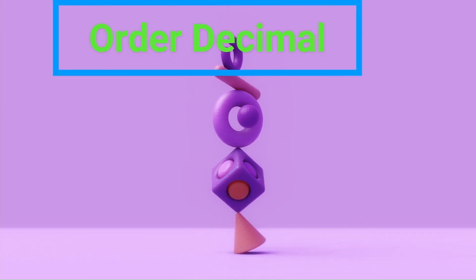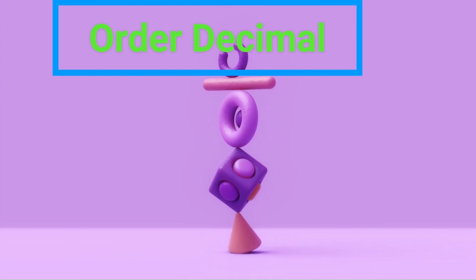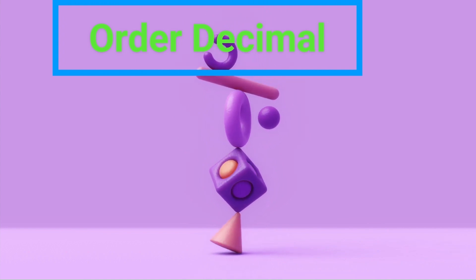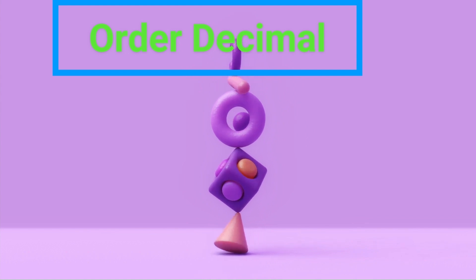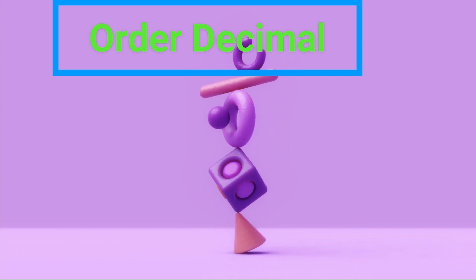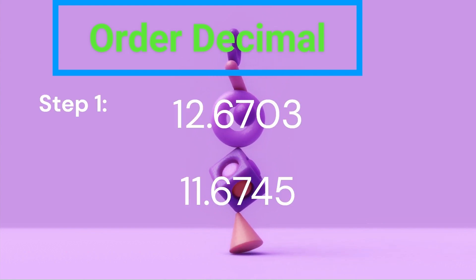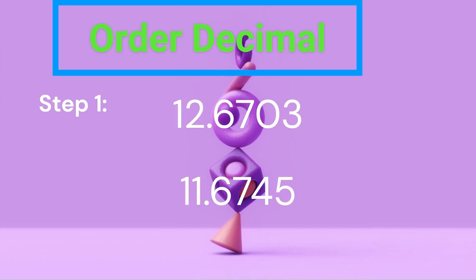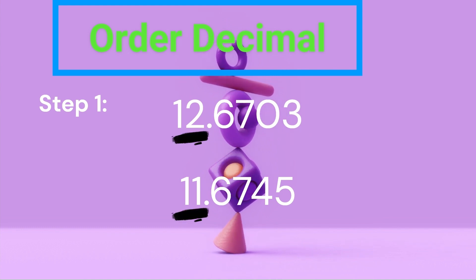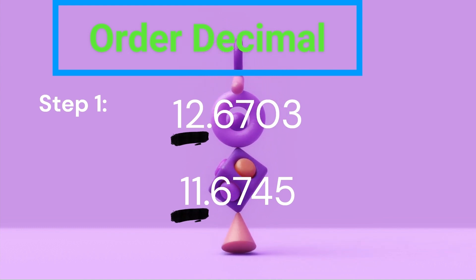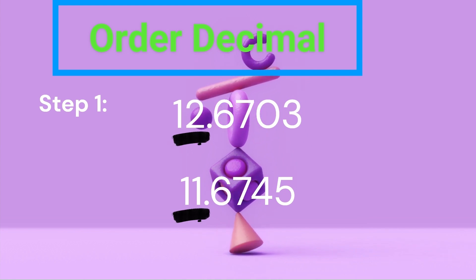Order Decimals. To order decimals, you compare the digits starting from the left, moving to the right. The goal is to determine which decimal is the smallest and which is the largest. We will do it in steps. Step 1: Compare whole numbers first. You look at the whole number part of the decimals — the part before the decimal point. A larger whole number means the decimal is larger.